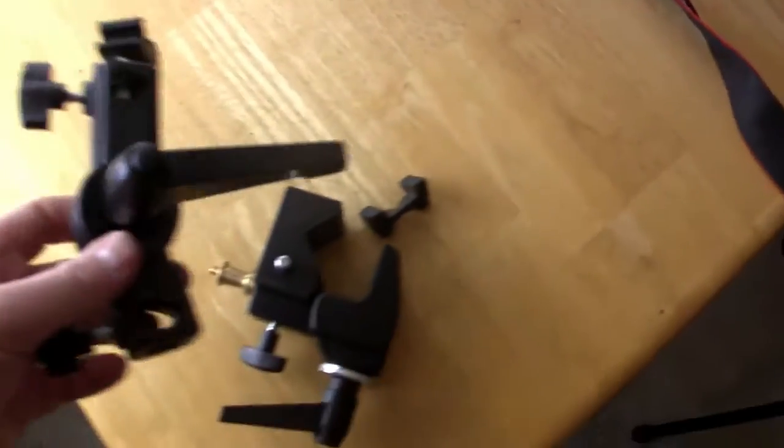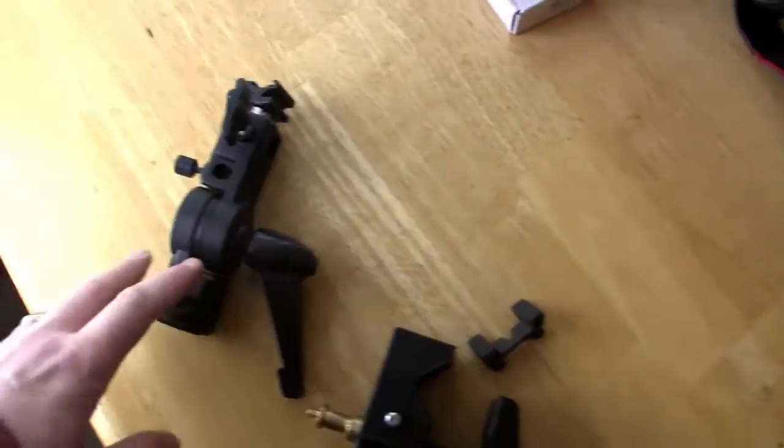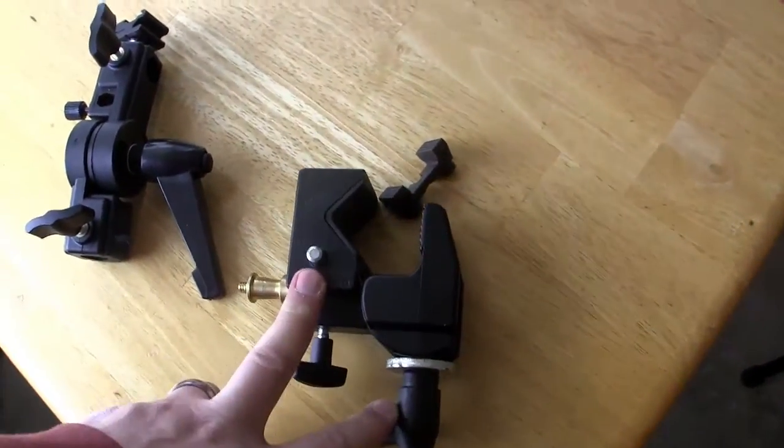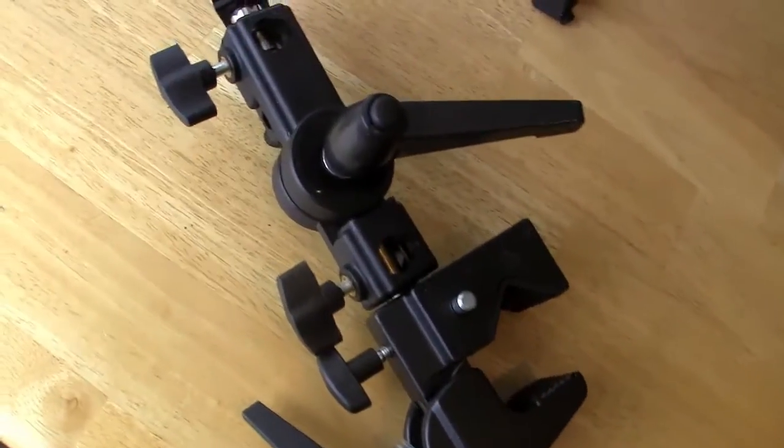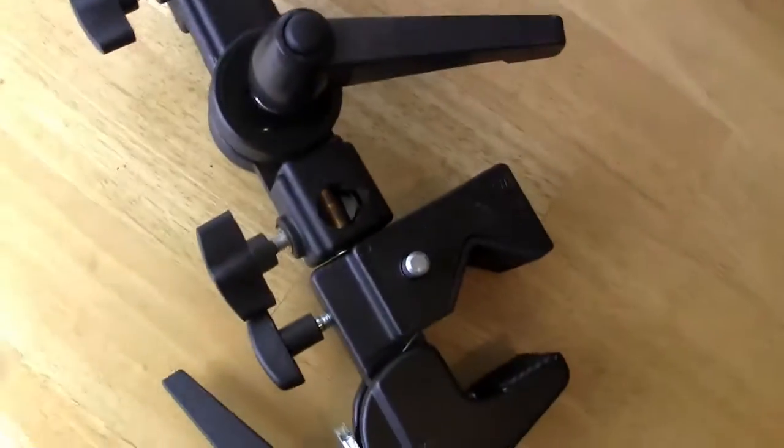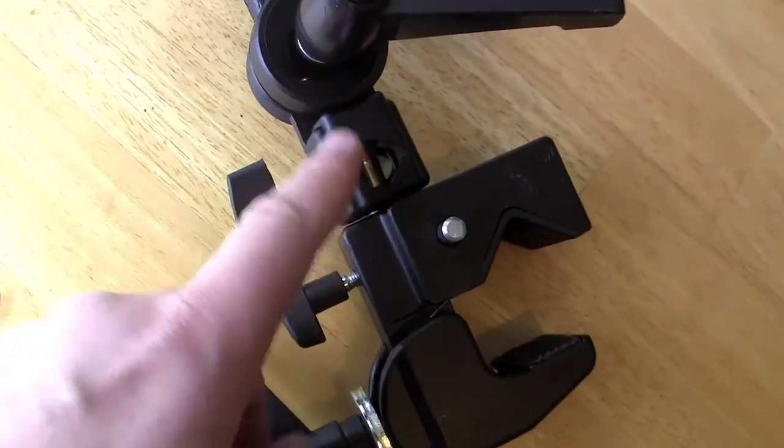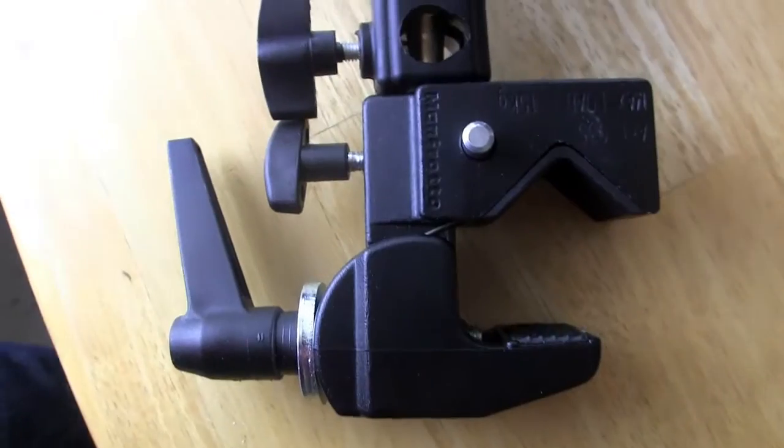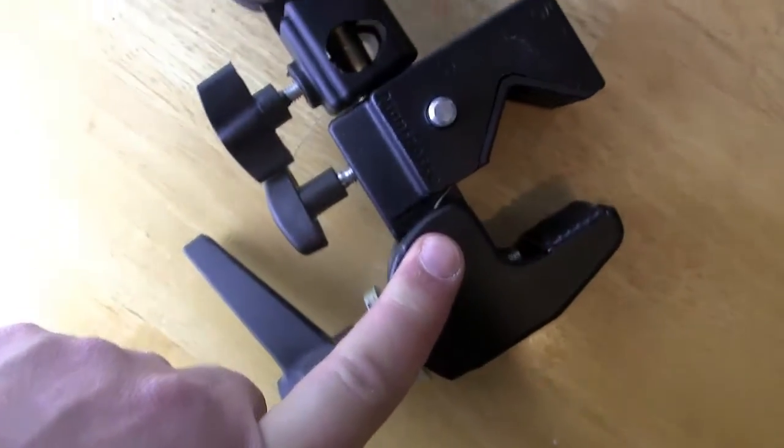So that's why this extra little clamp for 12 bucks is really a great addition to this Manfrotto, which is about 30, 35 I think. So there it is clamped down on top of that little accessory knob on top of the angry shark, angry whale it looks like, Manfrotto clamp.